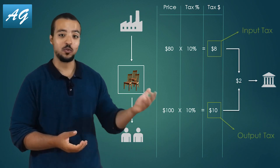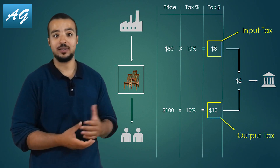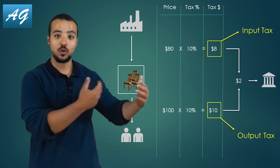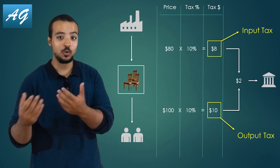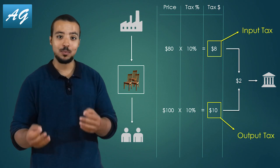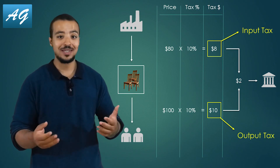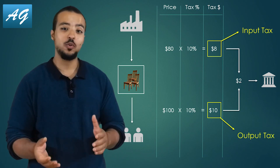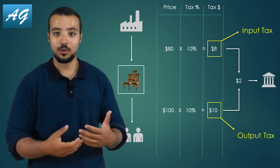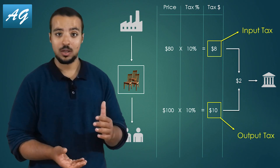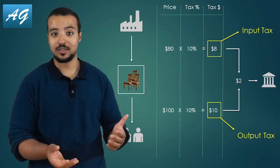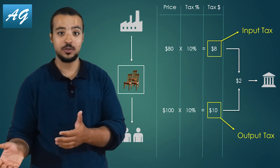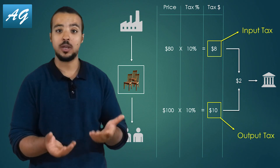The taxes we collect from our customer is called output value-added tax, because this is the tax we collect when putting products out of our store. The taxes we pay to our supplier is called input value-added tax, because this is the tax we pay when putting products into our store. At the end of every tax period — for example, three months — the store has to make a report showing the amount of taxes collected from customers and the amount paid to suppliers, and the difference to pay to the government.